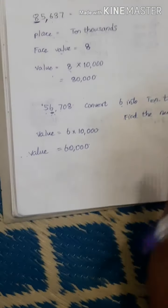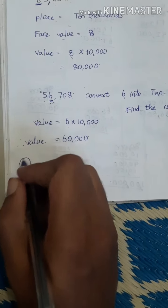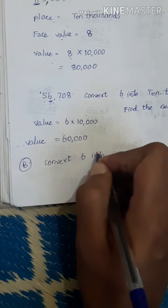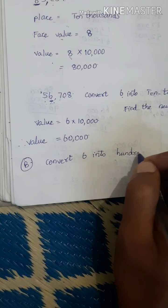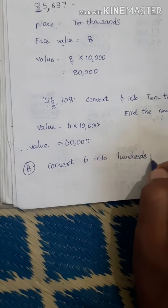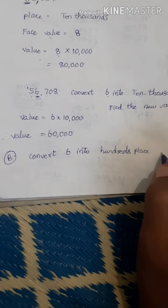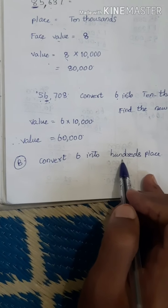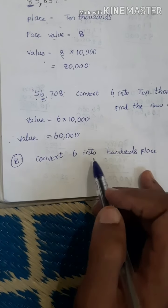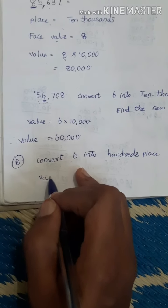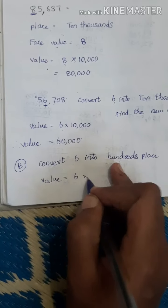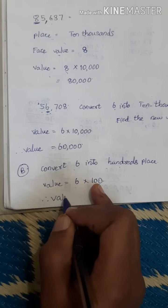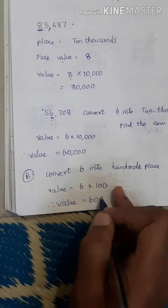In the same question, they will tell you to convert 6 to the 100 place and find the new value. Value means place × face value. Place is 100, face value is 6. So value equals 6 × 100 = 600.